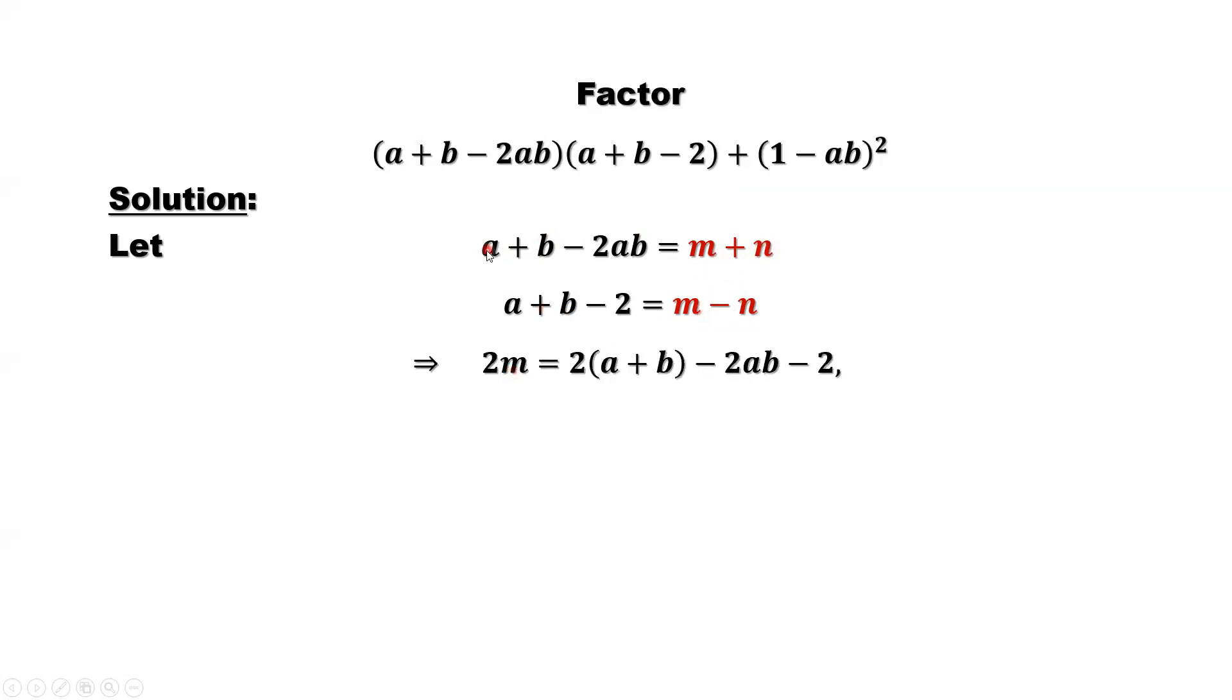2m equals 2 times, we have 2a plus b here, minus 2ab minus 2. Get rid of 2, we will have m equals a plus b minus ab minus 1. We have m now.